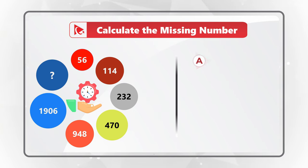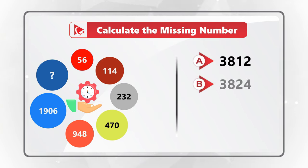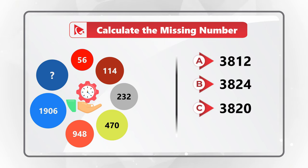Choice A: 3812. Choice B: 3824. Choice C: 3820. And then choice D: 3800.